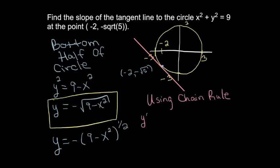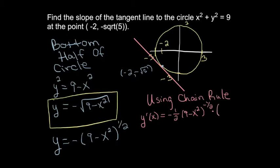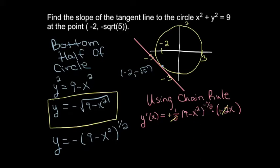Taking the derivative using the chain rule, I start by taking the derivative of the outside function. Bring the one-half in front and decrease the power by 1, giving negative one-half. Then multiply by the derivative of the inside function. The derivative of 9 minus x squared is negative 2x. The negatives combine to give a plus, and the 2s cancel. Then put the negative one-half power in the denominator.